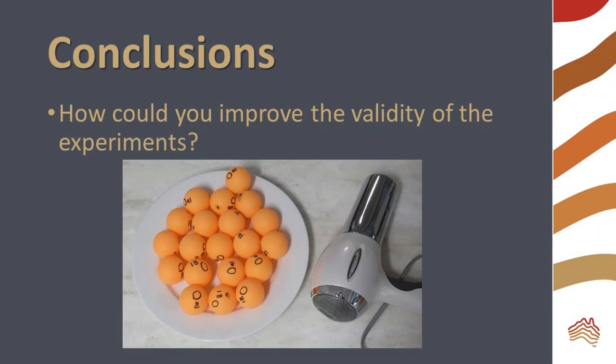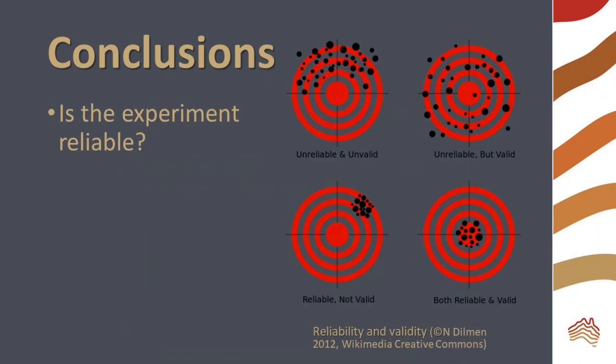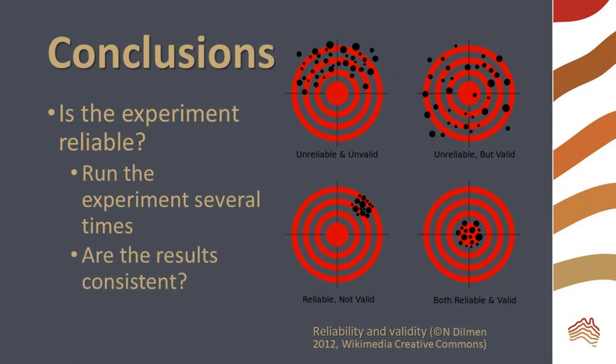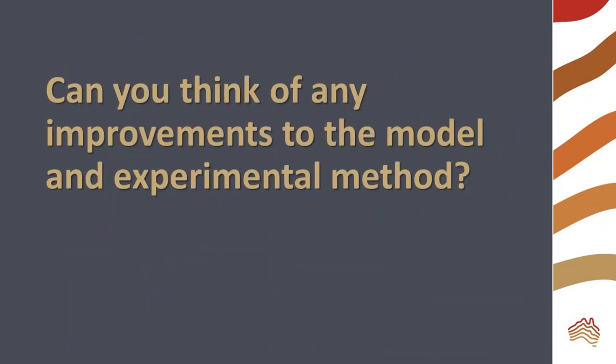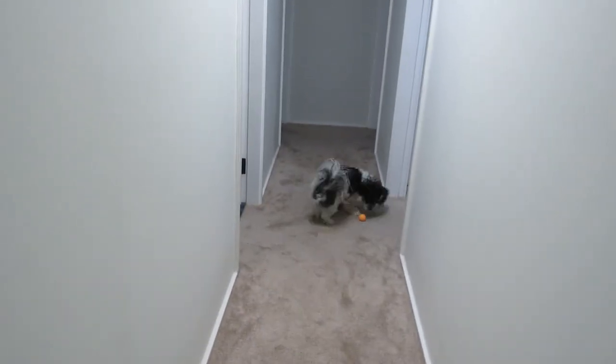How could you improve the validity of the experiments? If a model is not valid, it cannot provide helpful information. Is this experiment reliable? Try running the simulation several times to determine an average ratio of isotopes in high and low energy conditions. Are the results consistent? Finally, can you think of any improvements to the model and experimental method? Maybe you can recruit someone to help pick up the ping pong balls.